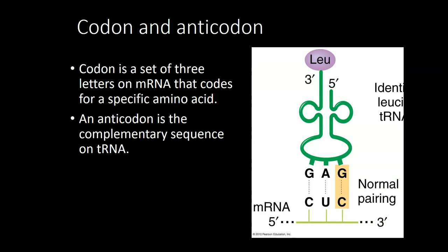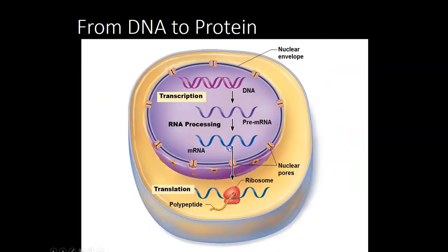A codon is a set of three letters on mRNA. The anticodon is a set of three letters on tRNA that matches up to the codon. This tRNA specifies the amino acid leucine. So that's how we know which amino acid to bring — the anticodon matches up. Overall: we copy DNA into RNA during transcription, the RNA leaves the nucleus and finds a ribosome, and the ribosome carries out translation by reading the mRNA and building a protein.